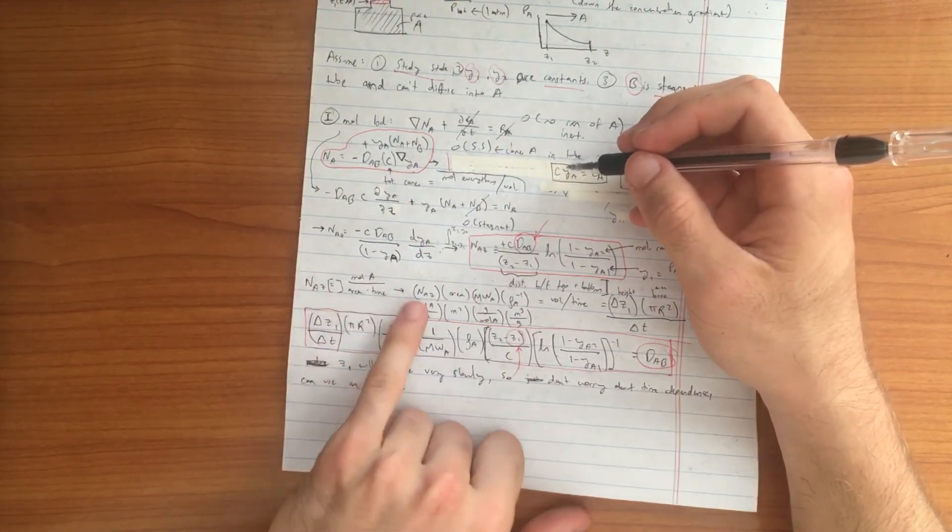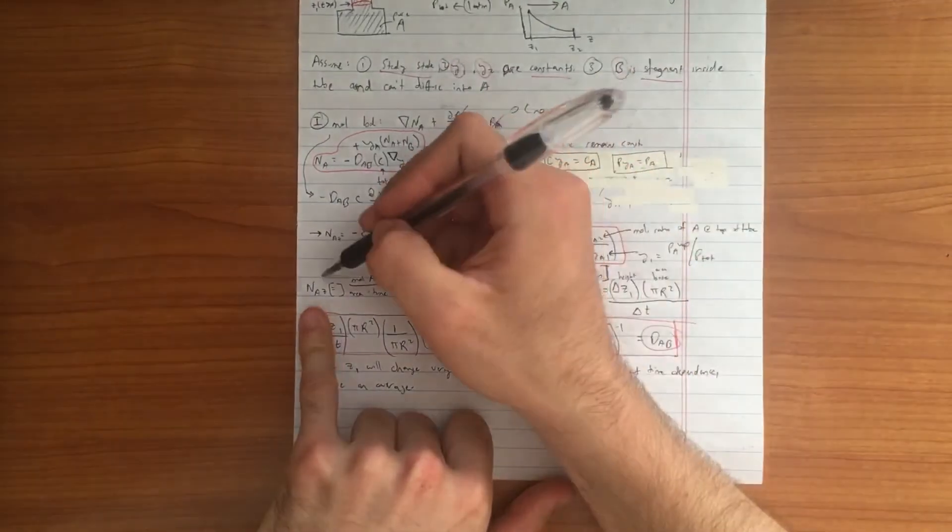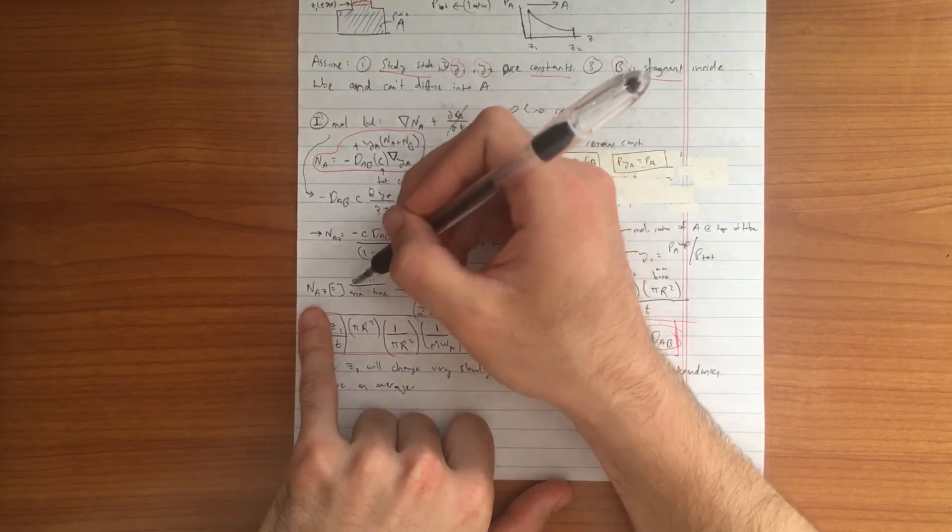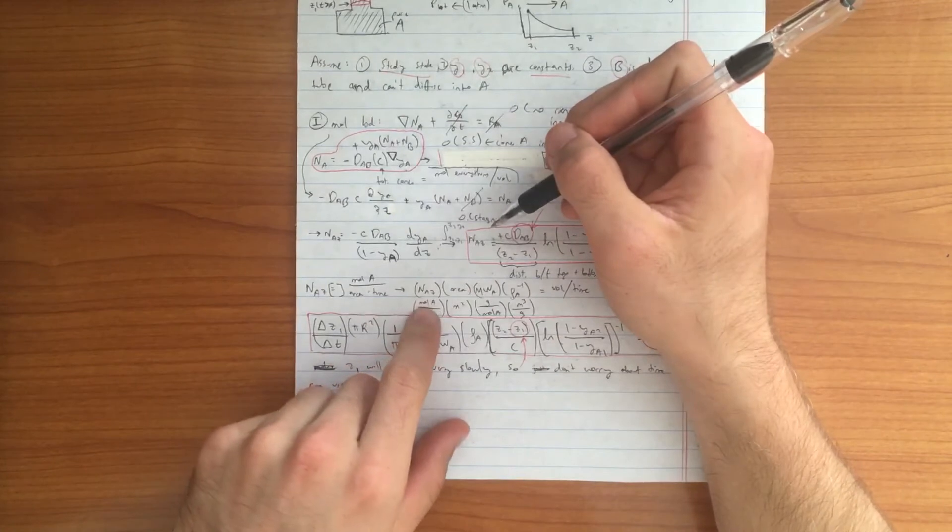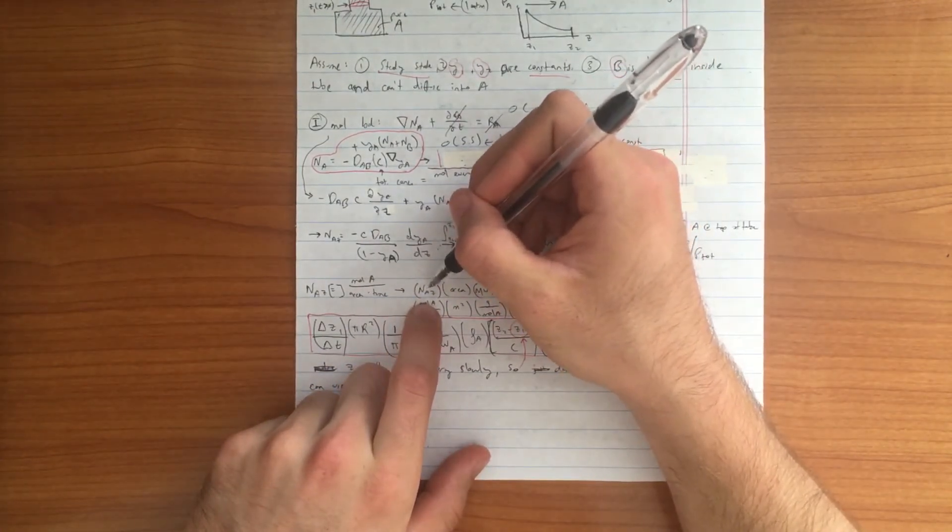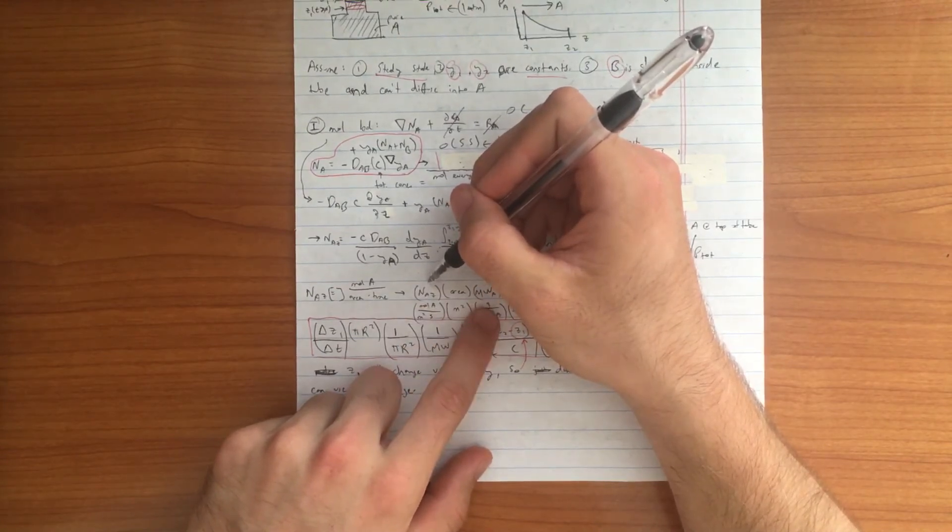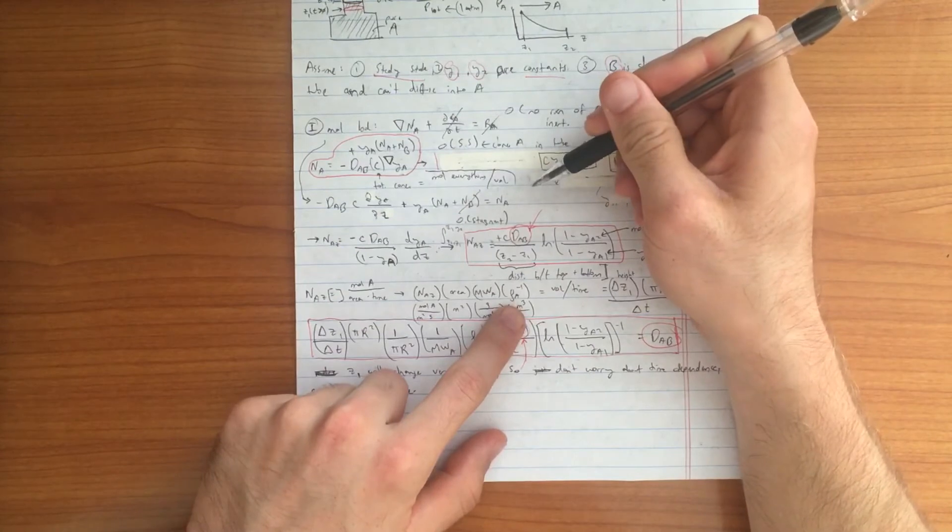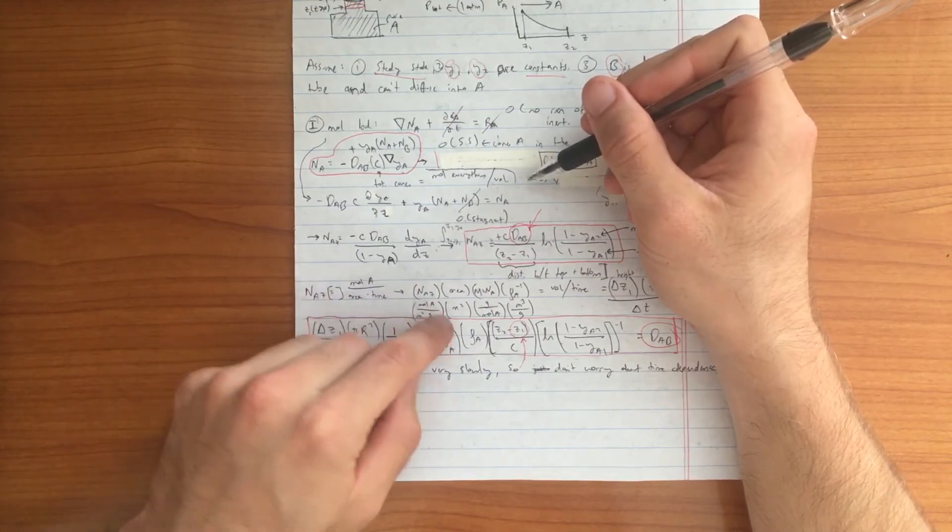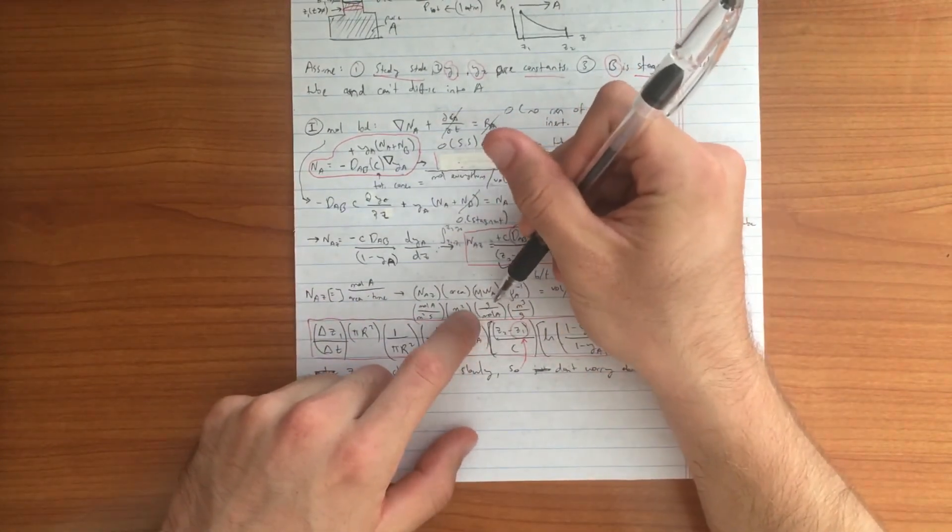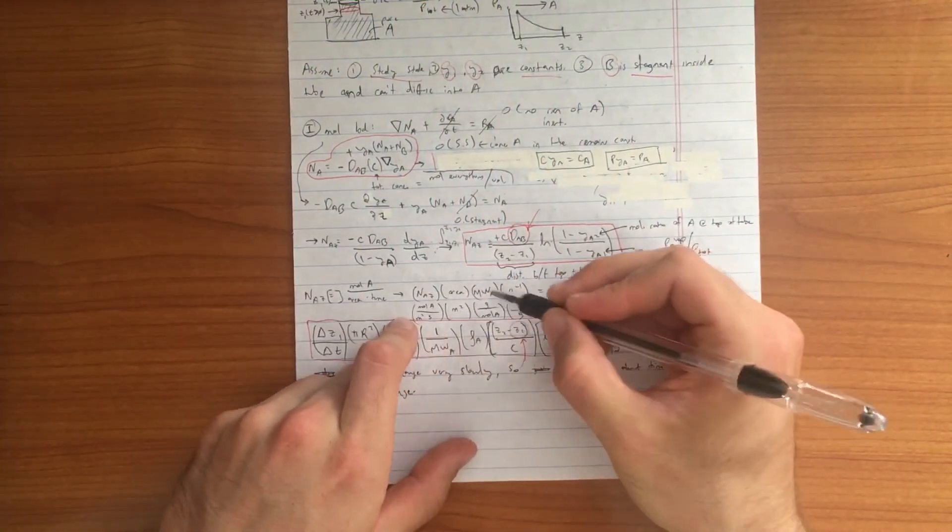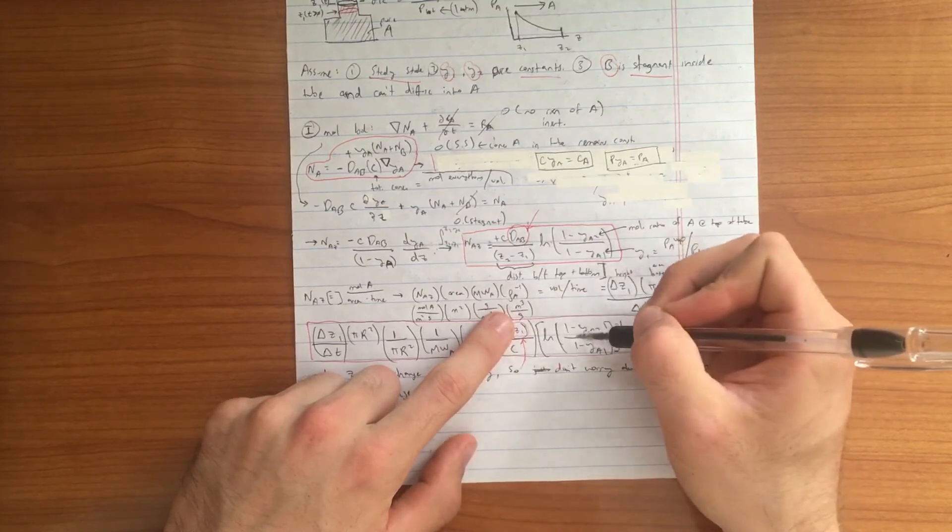If we do a dimensional analysis on what molar flux is, if we recall the definition, molar flux is defined as the moles of A divided by area times time. If we multiply the molar flux of A in the Z direction by area times the molecular weight of A and then divide that by the density of component A, we will get units of volume per time. So moles per meter squared per second times meters squared times grams per mole of A. You can analyze these units on your own time, but you'll see that it cancels out nicely and we're left with meters cubed per second.